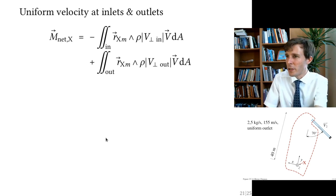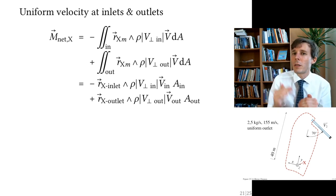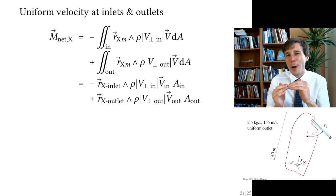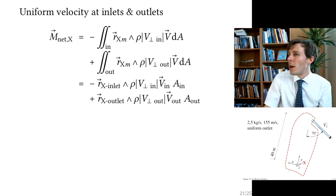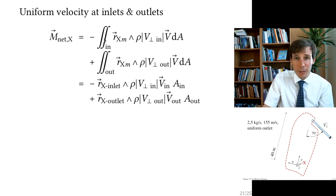We can drop the integrals because the flow at both inlet and outlet is uniform — nothing inside the integral depends on position across the area, so it factors out, leaving only the integral of dA, which is simply the area A.